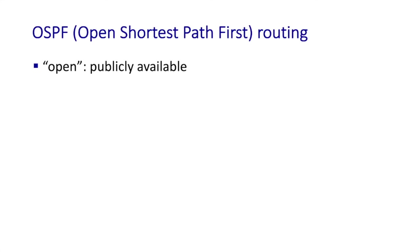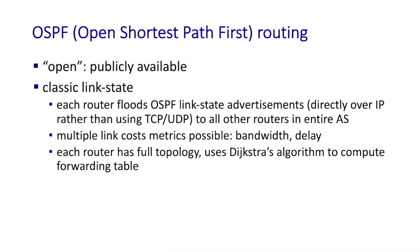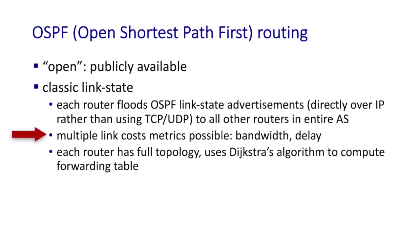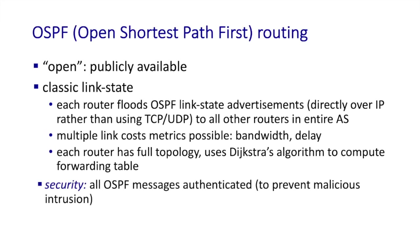OSPF — Open Shortest Path First — is a classic link state protocol. The 'open' means the specification is publicly available. Each router floods OSPF link state advertisements across the entire autonomous system, so every OSPF router has full topology information. OSPF then uses a Dijkstra-like algorithm to compute each forwarding table. Multiple link cost metrics are possible, such as available bandwidth or link delay.